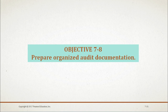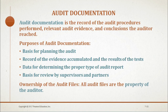Moving on, we will now discuss documenting the procedures, evidence, and conclusions of an audit. Auditing standards state that audit documentation is the record of the audit procedures performed, relevant audit evidence, and conclusions the auditor reached. Audit documentation may also be referred to as working papers or work papers, although it is usually maintained in computerized files. The objective of audit documentation is to provide a basis for planning the audit, record the evidence accumulated and the results of the tests, serve as a source of data for determining the proper type of audit report, and provide a basis for review by supervisors and partners.